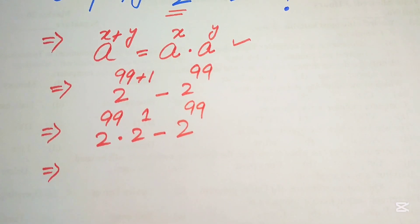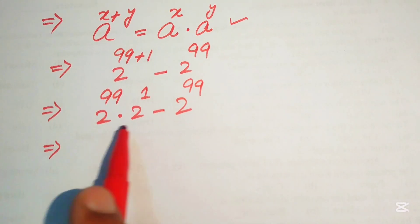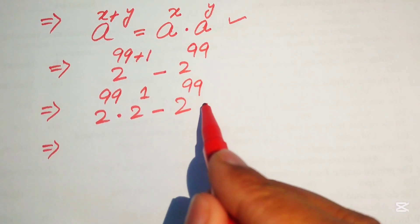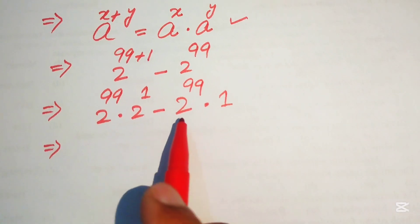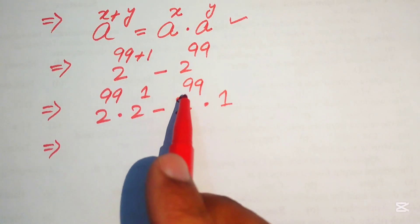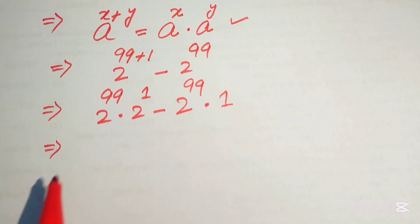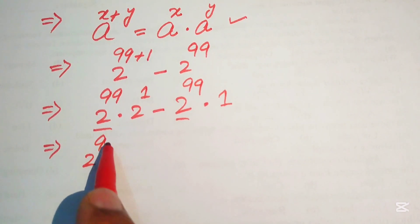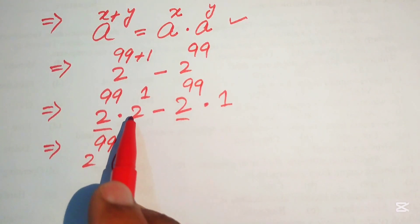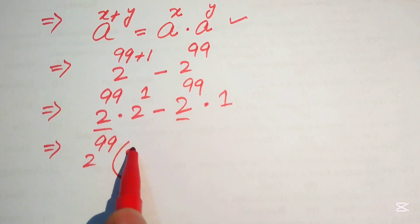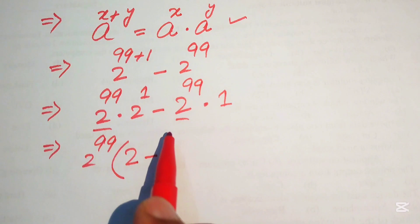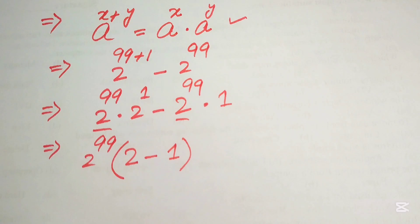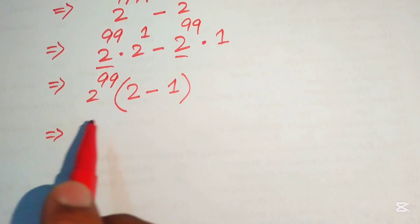After this step, you can see that we have 2 to the power of 99 as a common term. If we just have 2 to the power of 99 alone, it cannot be factored to give our final answer. So we write the second 2 to the power of 99 as 2 to the power of 99 multiplied by 1. Now 2 to the power of 99 is the common term, so we factor it out. The remaining terms are: 2 to the power of 1, which is simply 2, minus 1.